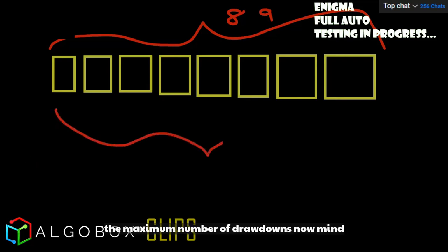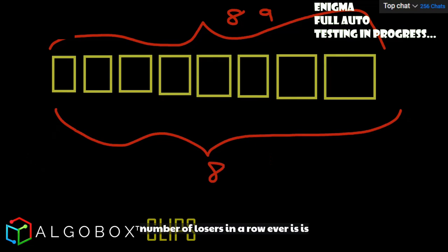But you need to understand your system to know what is the maximum number of drawdowns. Most of the time in our systems, the maximum number of losers in a row I've found ever is usually eight. The percentage chance of us losing eight in a row is like 1.7%. Nine is like 0.003%.